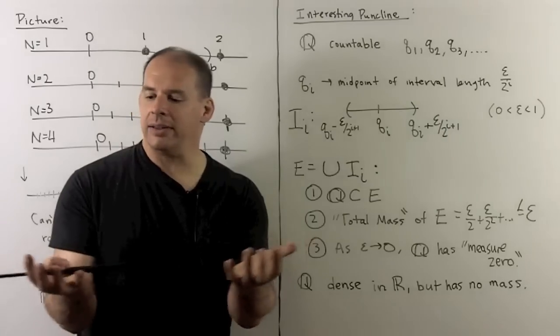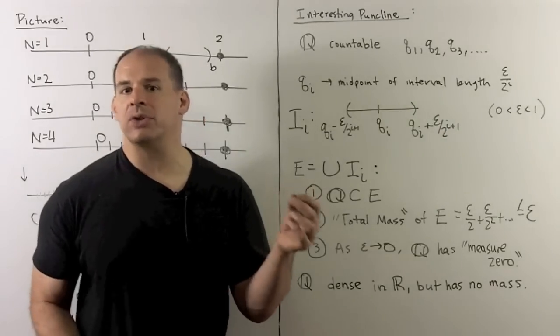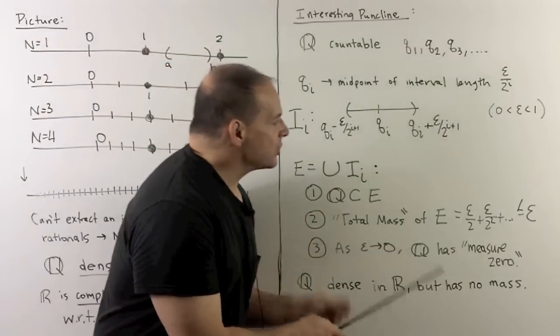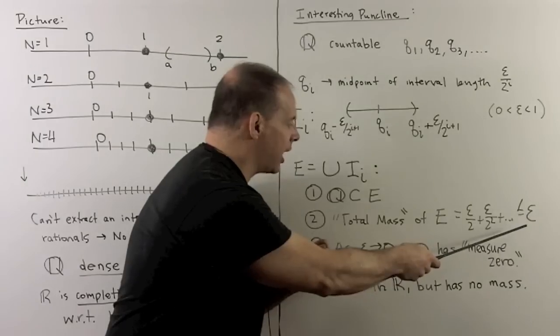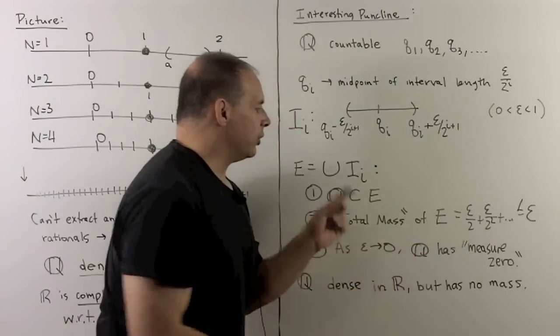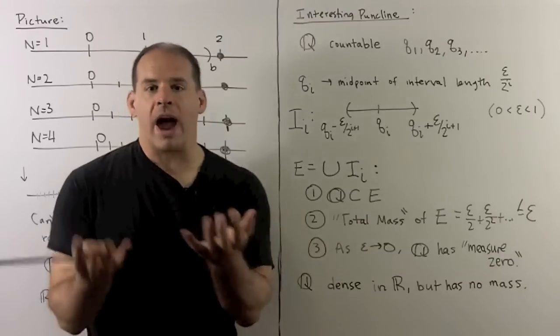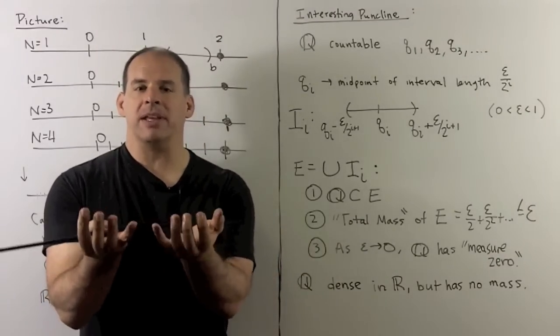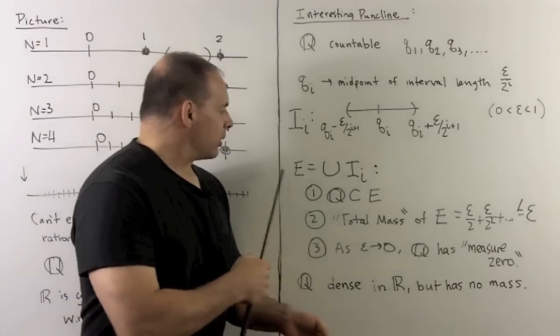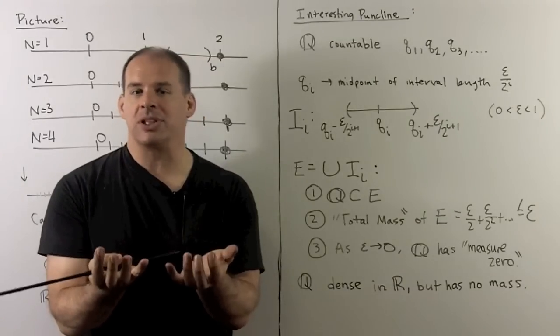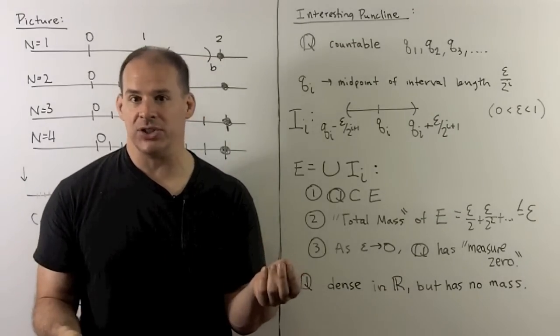And we note, if we're in the real line, these intervals might overlap, so we can say for sure that this total mass is going to be less than or equal to epsilon. Now, note, we're taking our rationals, and I could fit them inside of a subset of the reals, which has total mass less than or equal to epsilon for any epsilon that's bigger than zero.